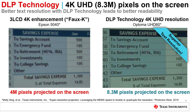We performed a shootout with a 3LCD product that claims 4K enhancement and a DLP product with true 4K UHD resolution. As you can see, the DLP product delivers superior text resolution compared to the 3LCD product. When you dig deeper into the technology differences, you can see the advantages DLP technology has with 8.3 million addressable pixels, as opposed to 3LCD's only 4 million. As a result, some call 3LCD's 4K enhancement FO-K.